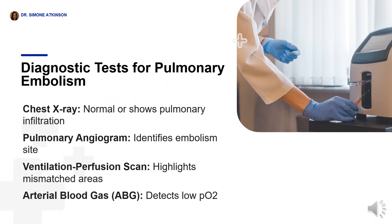Beginning with a chest X-ray, it may present as normal or show signs of pulmonary infiltration. A pulmonary angiogram will pinpoint the specific location of the embolism. A ventilation-perfusion scan provides valuable insights, revealing areas where ventilation and blood flow are mismatched. An arterial blood gas analysis is also crucial, as it can detect low PO2 levels indicating compromised oxygenation.